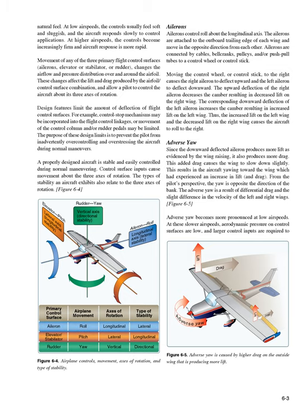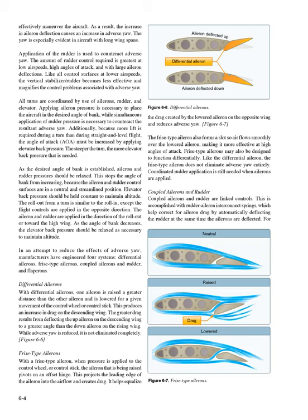Adverse yaw occurs because the downward-deflected aileron produces more lift and more drag, causing that wing to slow slightly. This results in the aircraft yawing toward the wing with increased lift and drag—opposite the direction of the bank from the pilot's perspective. Adverse yaw is a result of differential drag and slight velocity differences between the left and right wings. It becomes more pronounced at low airspeeds, where larger control inputs are required, and is especially evident in aircraft with long wingspans. Rudder application is used to counteract adverse yaw and is greatest at low airspeeds, high angles of attack, and with large aileron deflections.